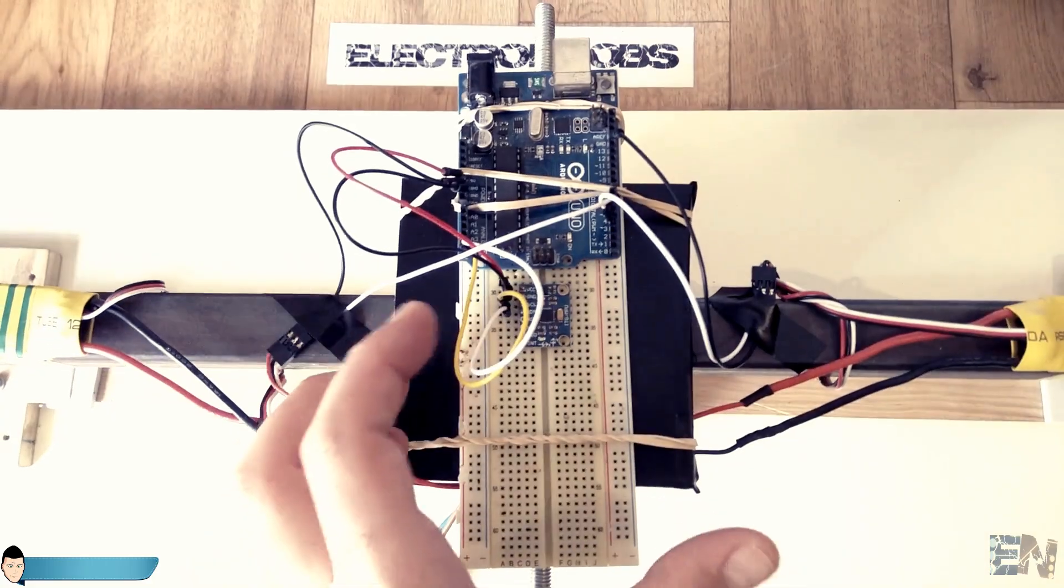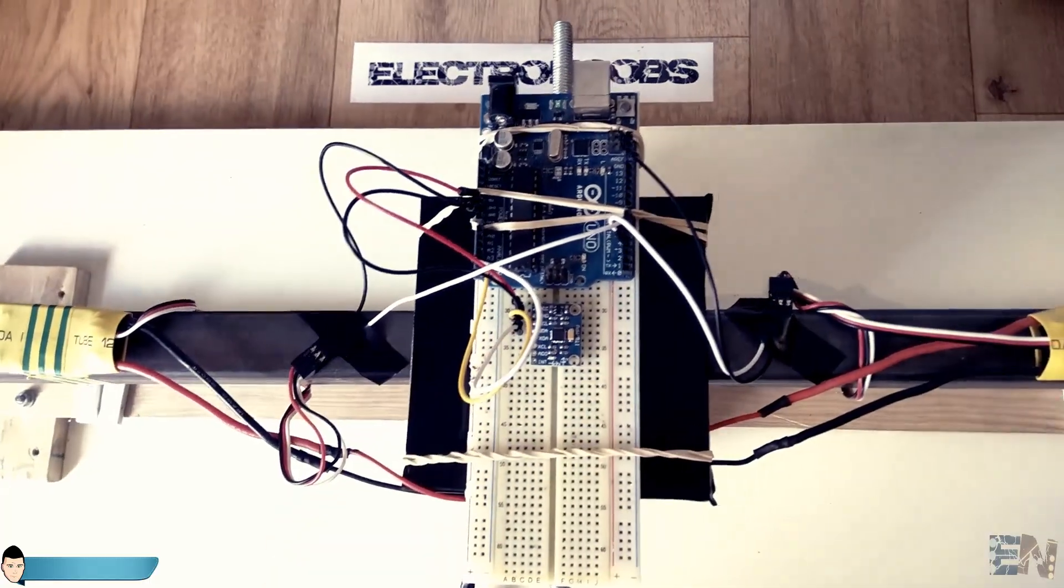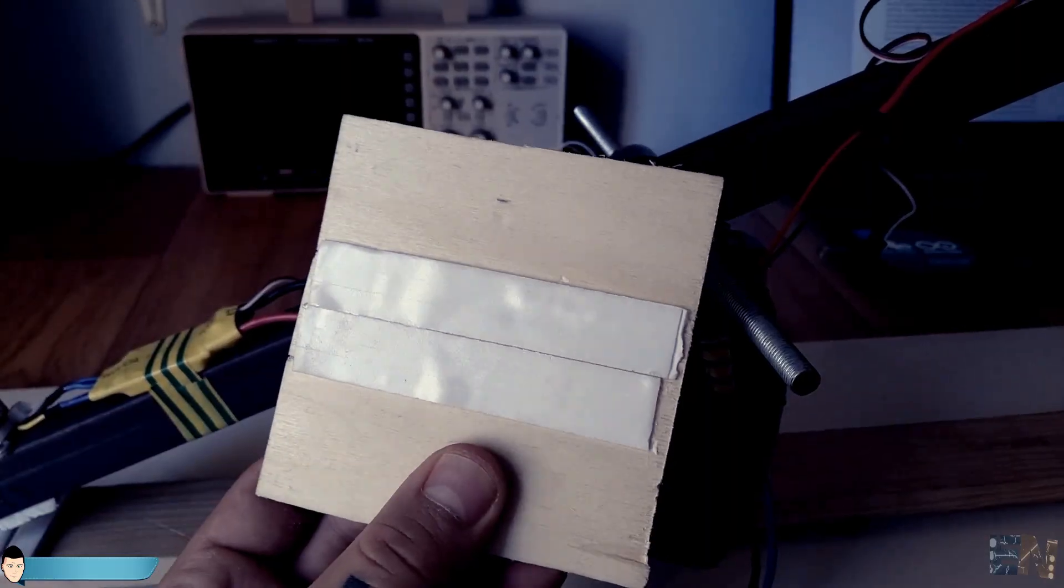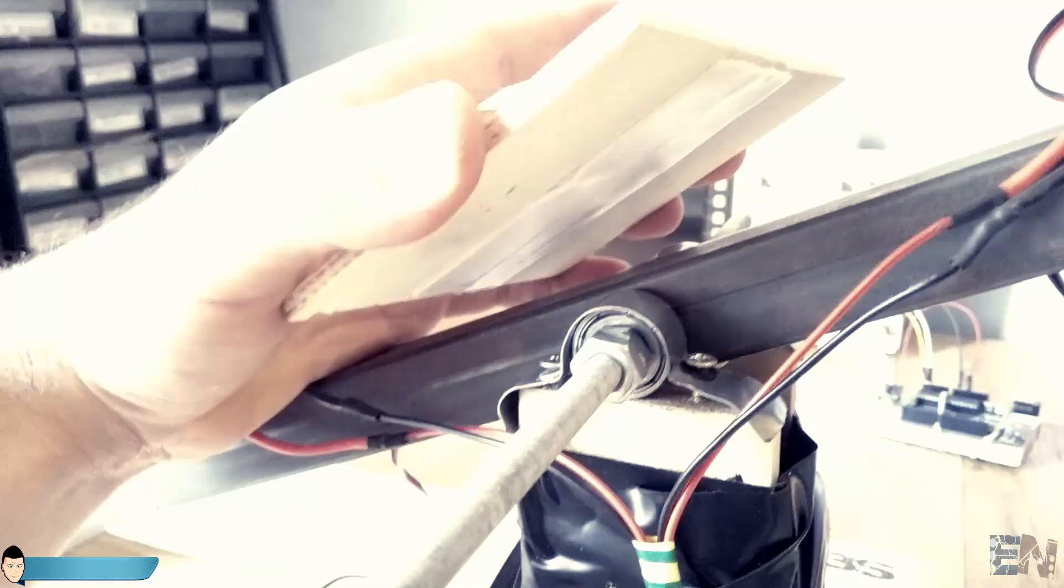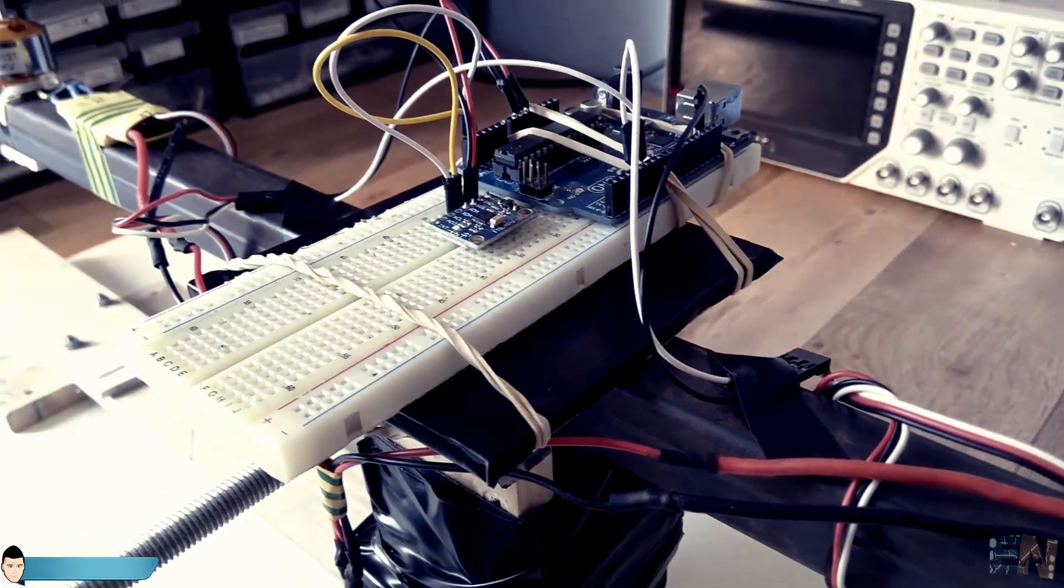Now make sure that you place the IMU board as center as you can between the two motors. I've used a small balsa wood board and some double side tape to fit everything in place. Now the circuit is ready.